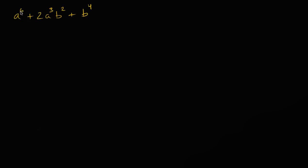At first it might seem a little intimidating. I have a to the sixth power — this is a sixth degree term. You have b to the fourth power. How do I handle it? But a clue: this is kind of looking like when I took the square of an expression with two variables.